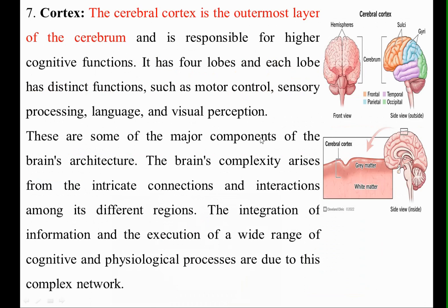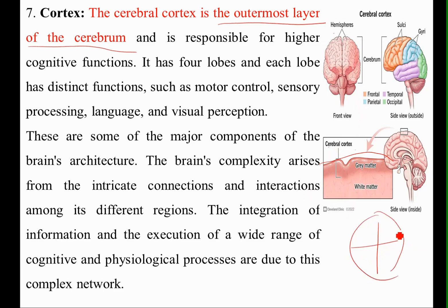The seventh component is the cerebral cortex, which is the outermost layer of the cerebrum. It is responsible for higher cognitive functions. It has four lobes, each with distinct functions such as motor control, sensory processing, language, and visual perception. These are the major components of the brain architecture. The brain's complexity arises from the intricate connections and interactions among different regions, enabling execution of a wide range of cognitive and physiological processes.